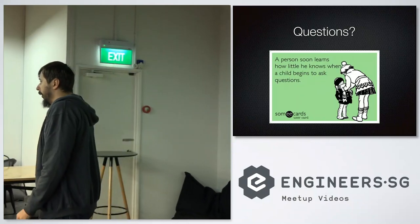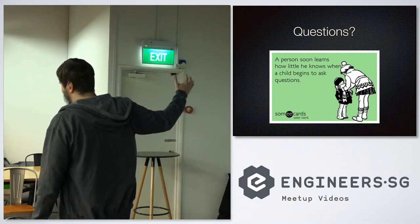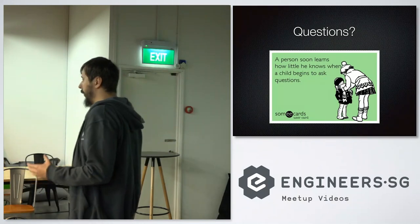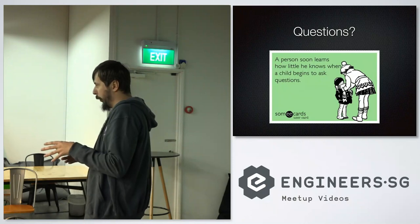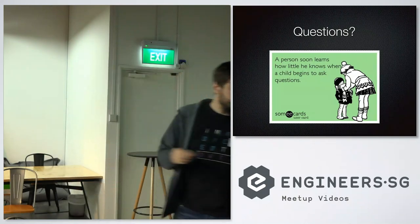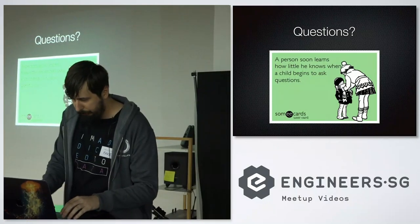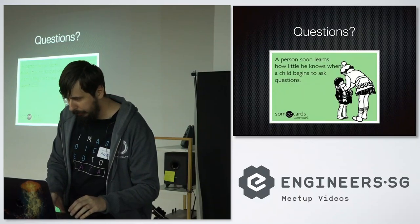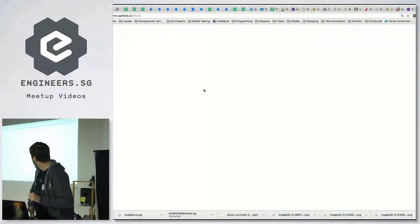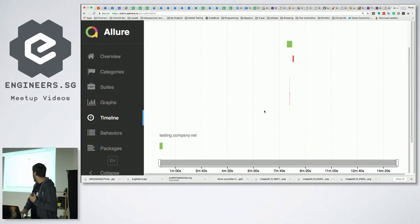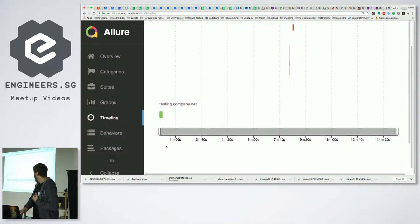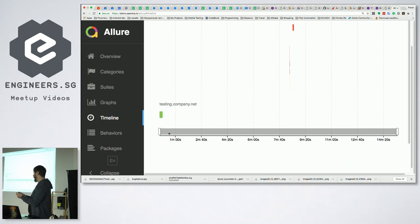How is Allure different from Serenity? I've never worked with Serenity, but I know Allure is simple and does everything I need. I can send the report to developers and they can find bugs without me, and send it to managers and they get all the information. The timelines show how long each test takes and which tests ran in parallel — if you have single execution, it's one line separated by test showing which test took how long.